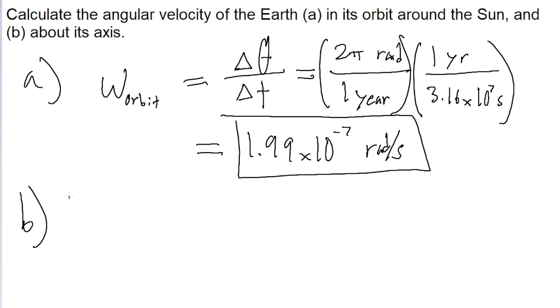Now about its axis. It's the angular velocity for its rotation. We're going to use the same formula, angular displacement divided by the time interval. And this time, once again, the angular displacement is the same. We're looking at one rotation, and a full rotation is 2π radians.